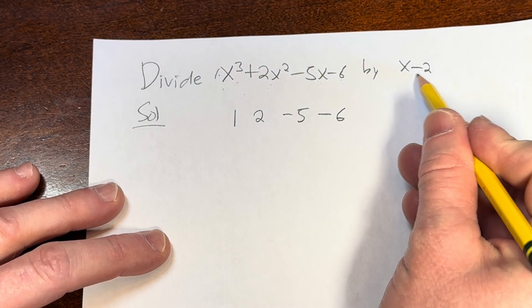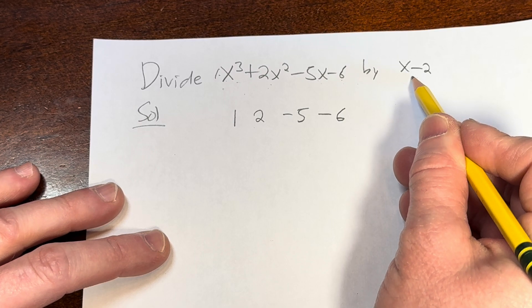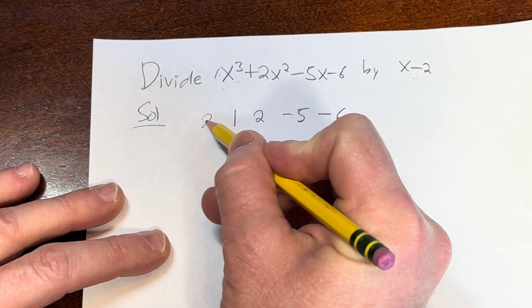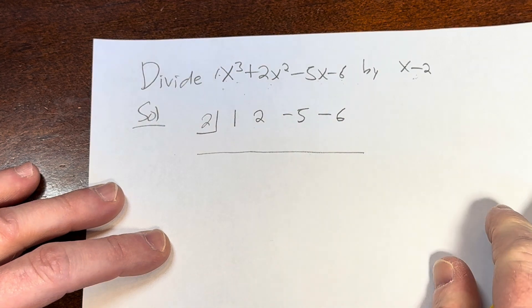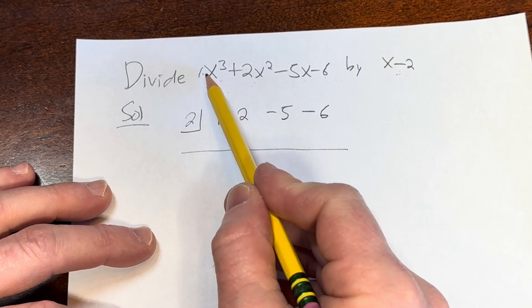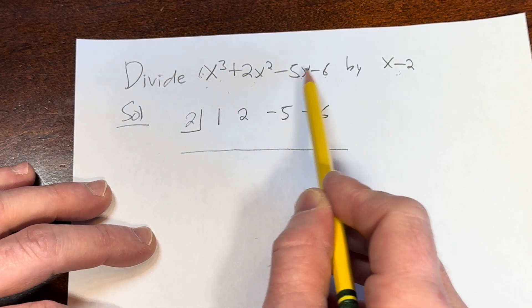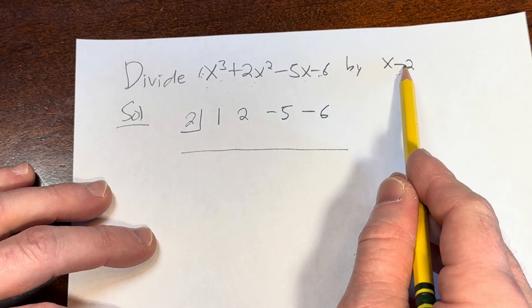Okay, and then what you do is you take this number here and you switch the sign. So that would be 2, and you write it like that, and then you draw a little line. Okay, so again, step 1 is just take the coefficients: 1, 2, negative 5, negative 6, and then we switch the sign here.